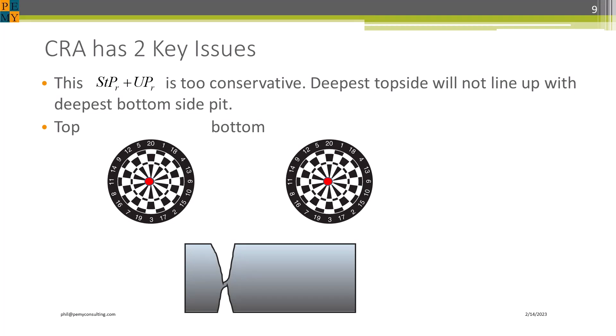Let's start with the first problem. Summing the deepest pit from the top side and bottom side is vastly over-conservative. The deepest top and bottom pits will simply never align with each other. Pitting is a random process, so it would be like someone who cannot throw a dart hitting a bullseye twice in a row.